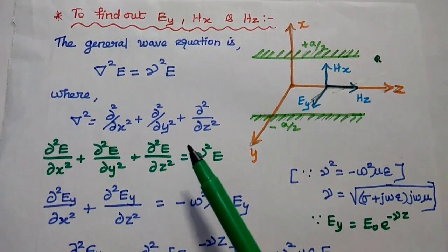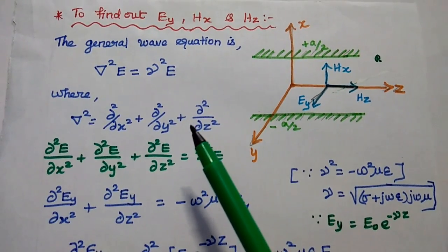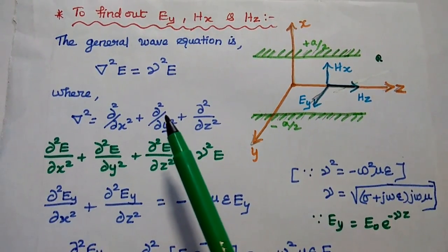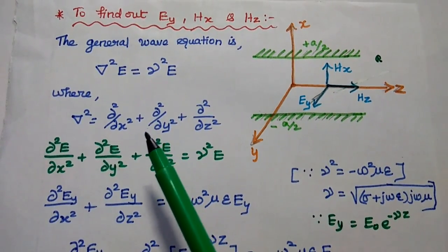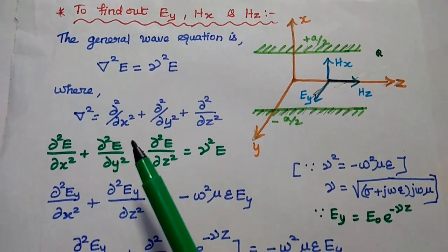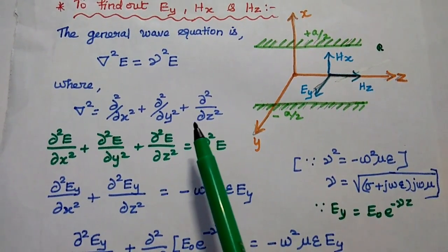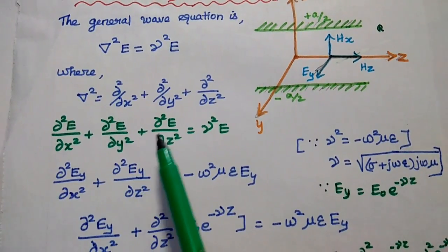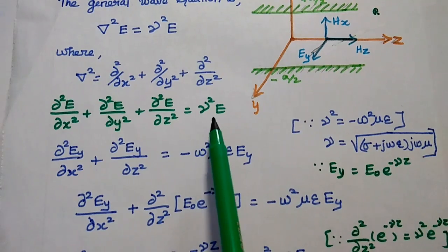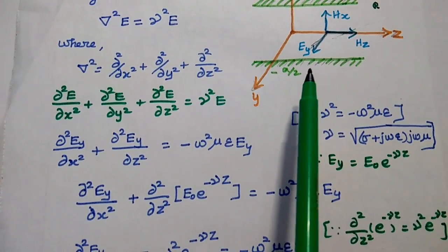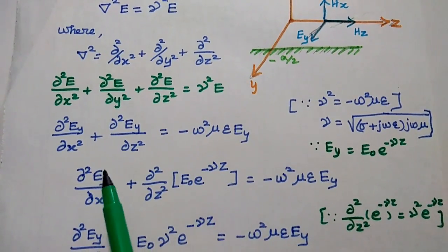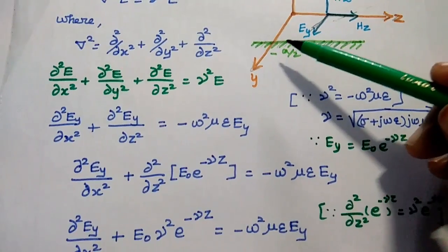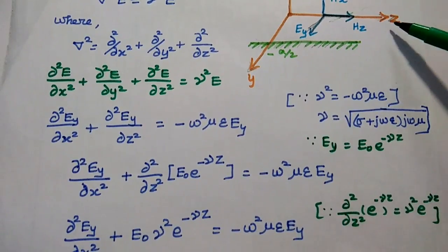In order to find the field components of TE waves, we consider the general wave equation of electromagnetic waves. The general wave equation is ∇²E = γ²E, where ∇² is the Laplacian operator. It can be represented as ∂²/∂X² + ∂²/∂Y² + ∂²/∂Z². Replacing ∇²E: ∂²E/∂X² + ∂²E/∂Y² + ∂²E/∂Z² = γ²E. Replacing E in terms of EY: ∂²EY/∂X² + ∂²EY/∂Y² + ... In the Y direction there is no EY component, but in the Z direction it has EY.